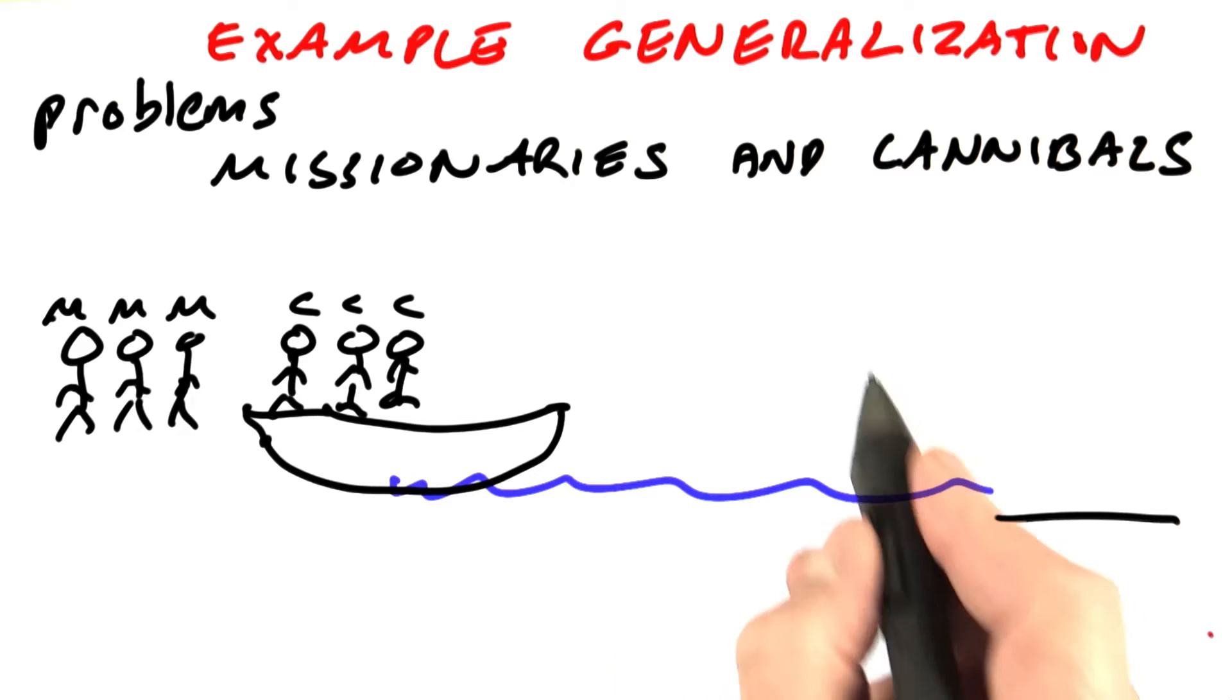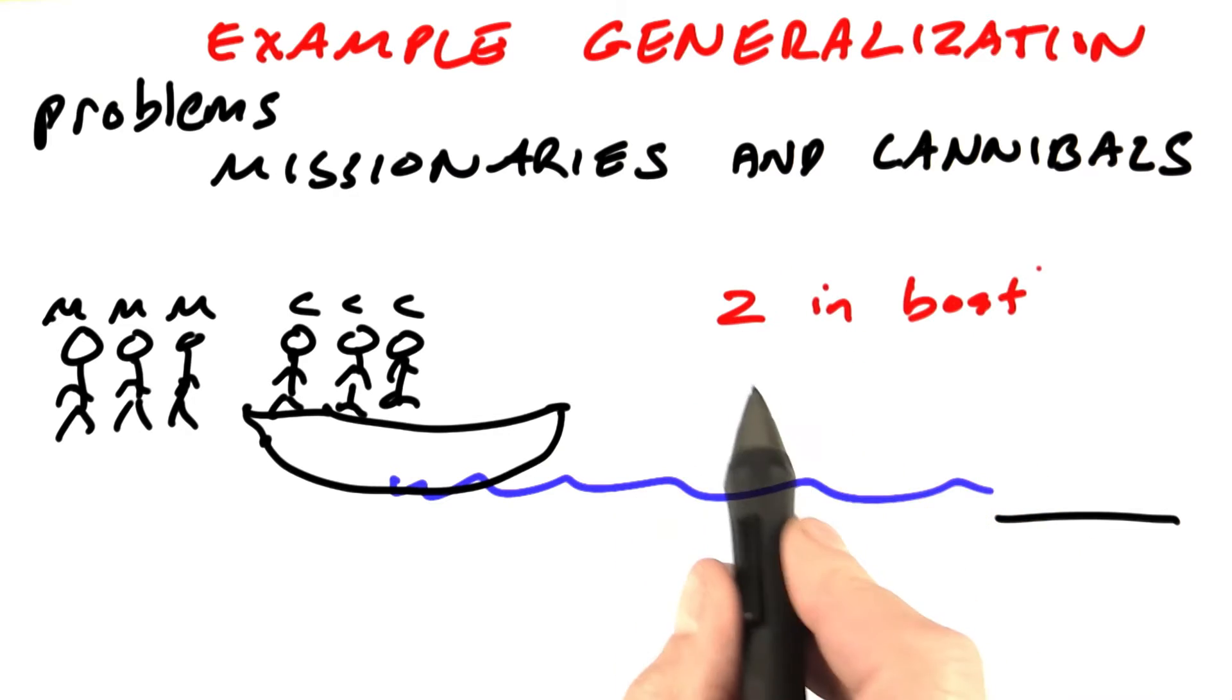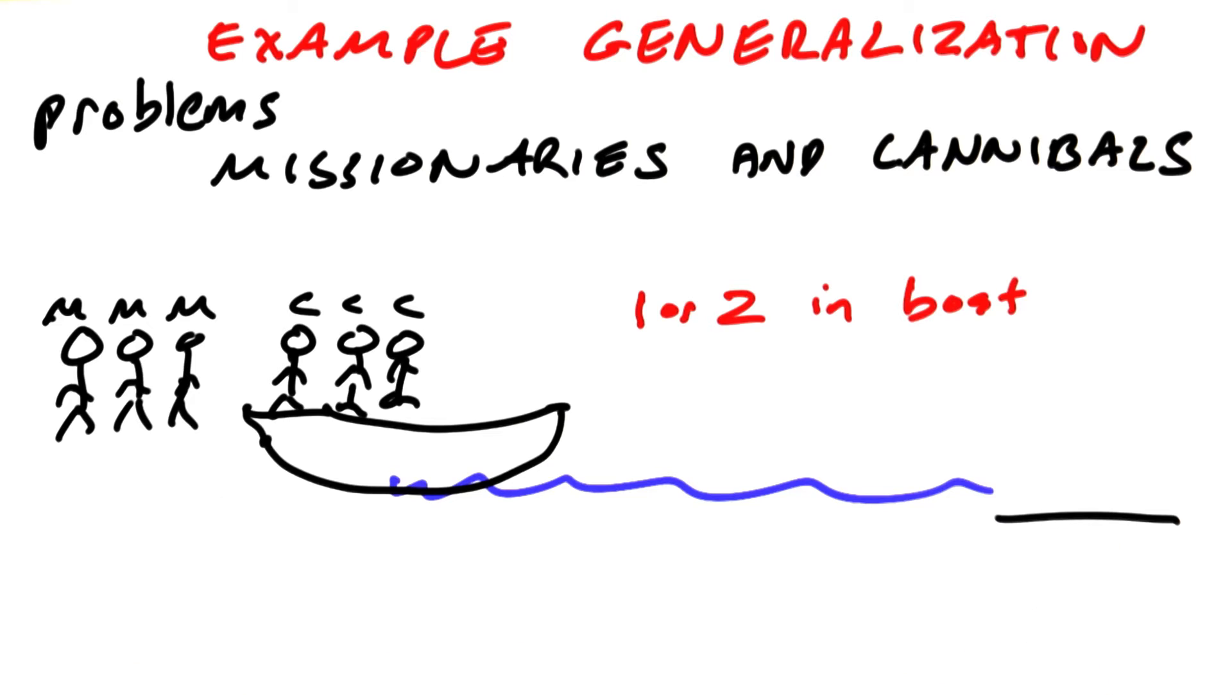The goal is to get everybody over to the other side. What makes it hard is that there are two rules. One, at most two in the boat. One person can go in the boat and cross from one side to the other, but it takes either one or two people to get the boat from one side and to get it back.